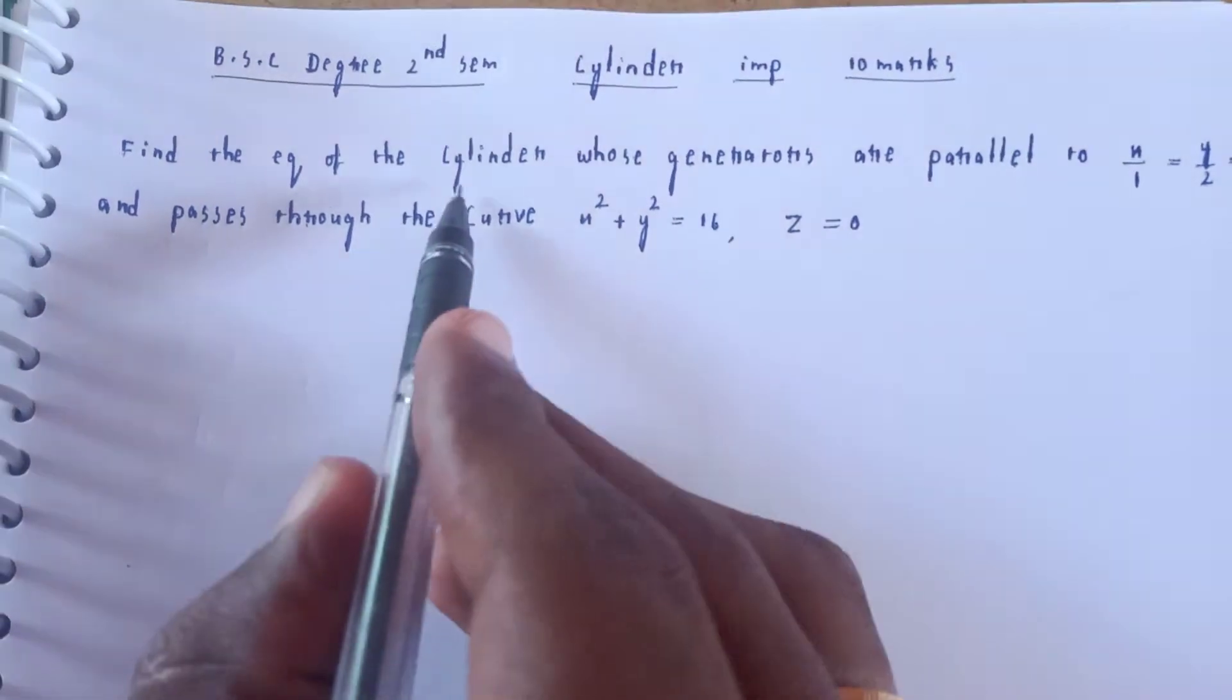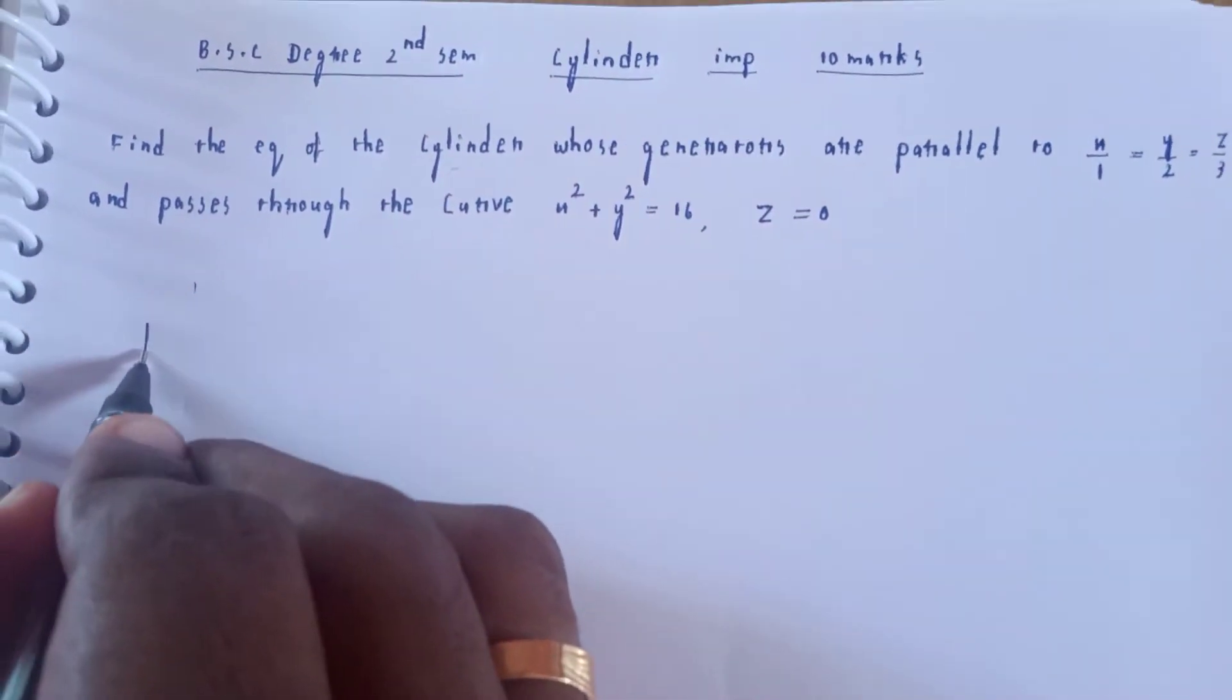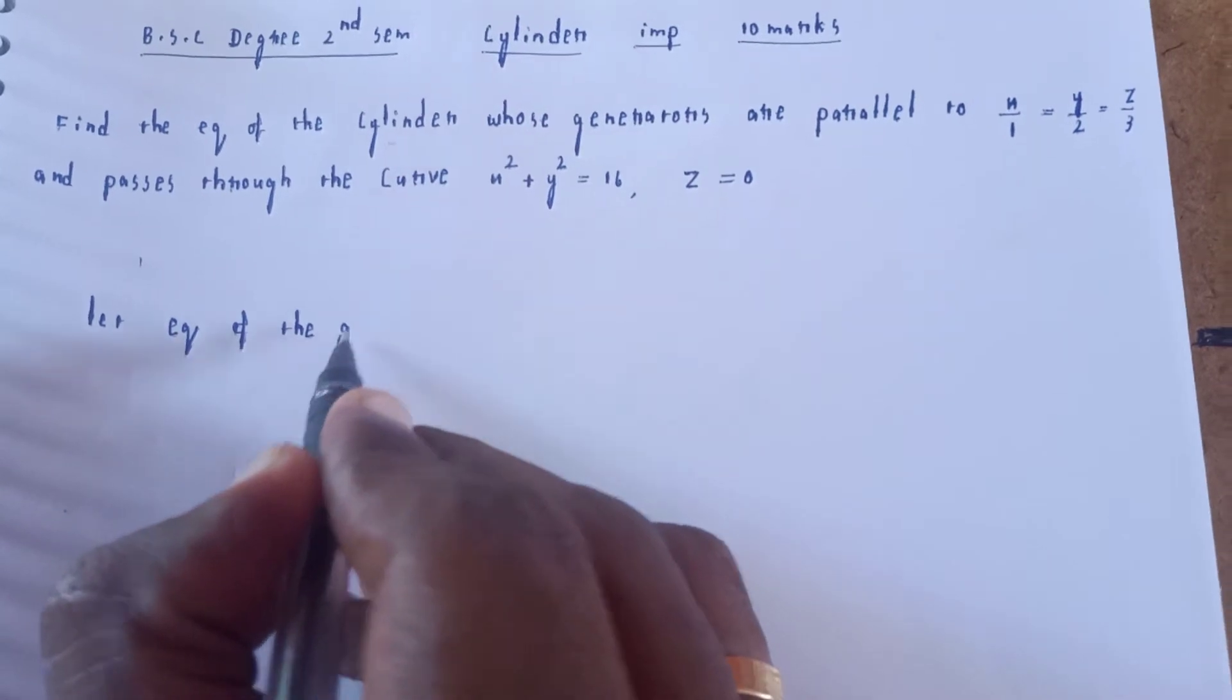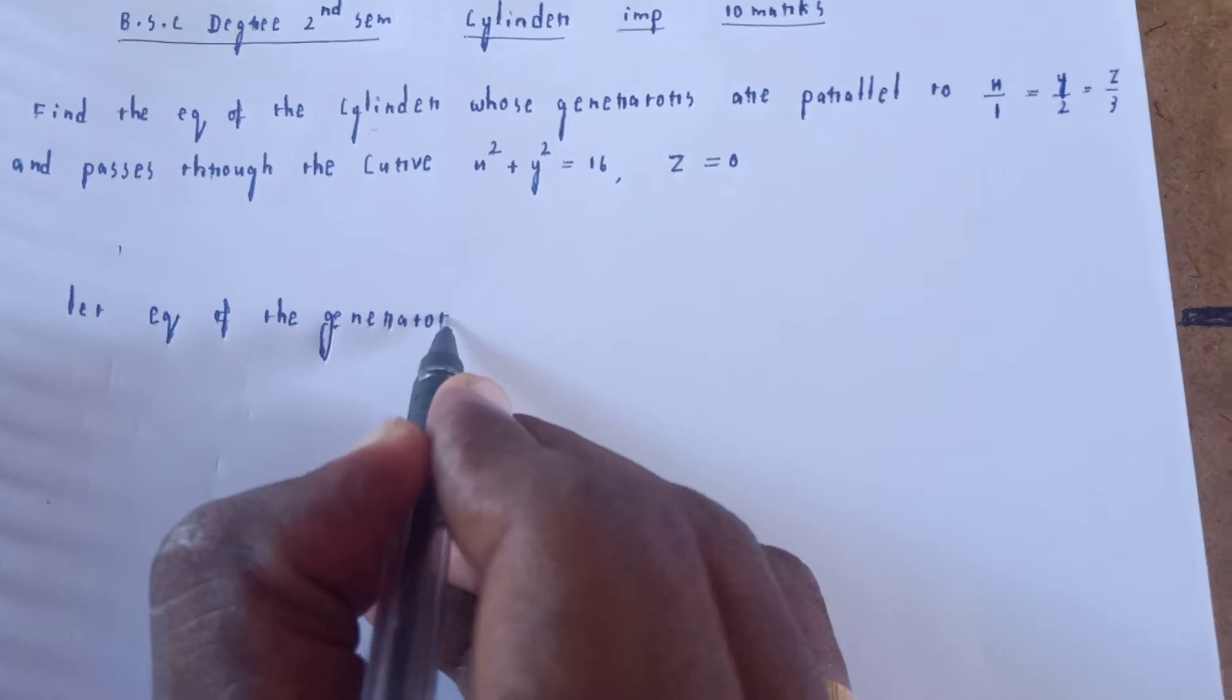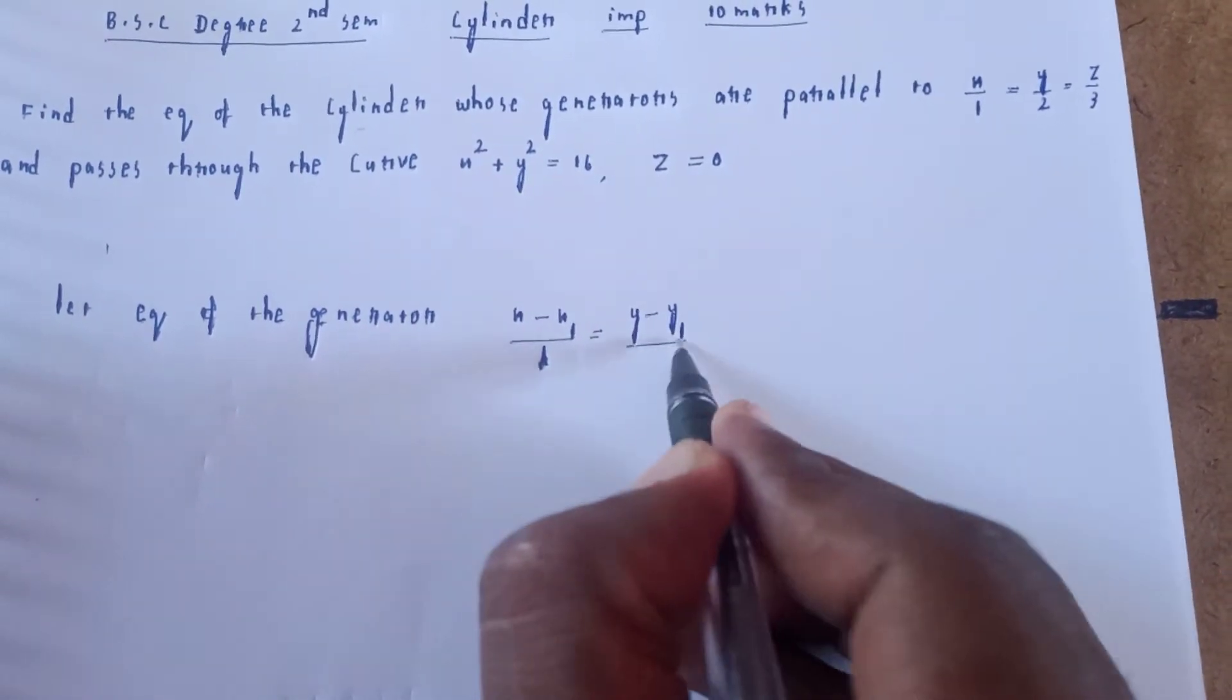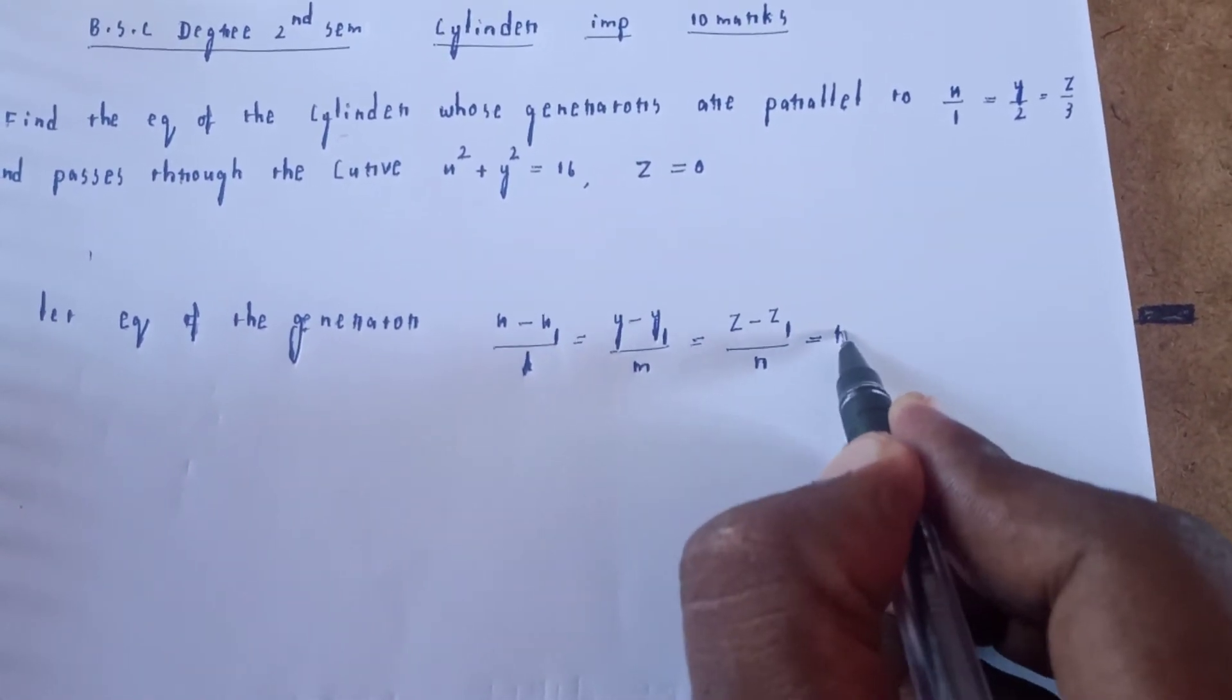First, find the equation of the generator. The general form is (x - x₁)/l = (y - y₁)/m = (z - z₁)/n = r.